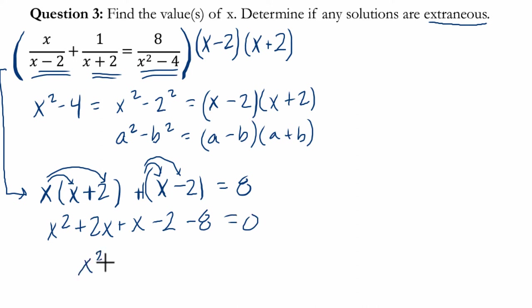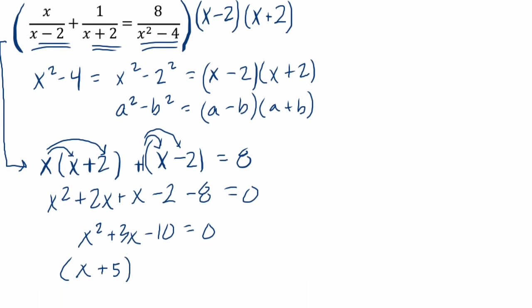So here, we're now down to x squared plus 3x minus 10 equals 0. And this factors to x plus 5 times x minus 2, which means the two roots of our equation will be x equals negative 5 and x equals 2. And these are two possible solutions.